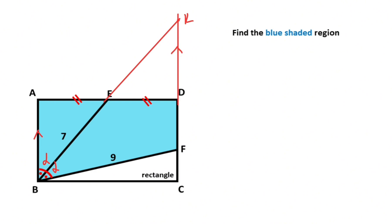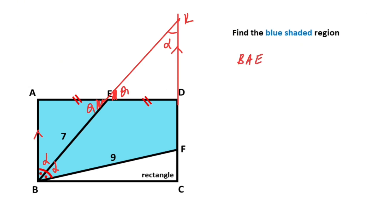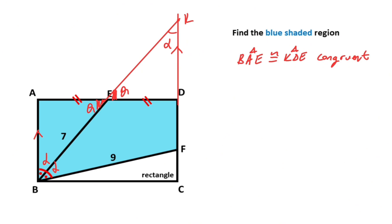If you notice that these two lines are parallel, so if here is alpha, then here must also equal alpha. Let's call this angle theta, so here must also equal theta. Notice that these two triangles have the same angles and opposite sides of the angles alpha are equal. That means triangle BAE and triangle KDE are congruent.